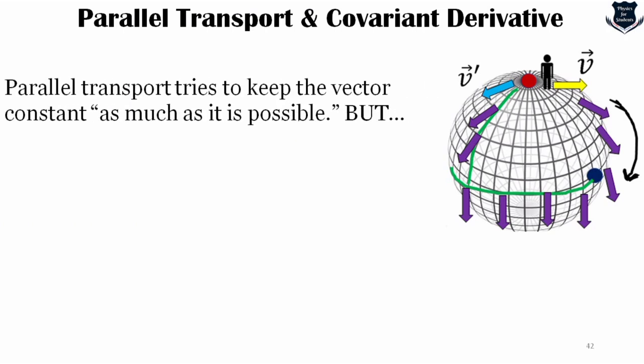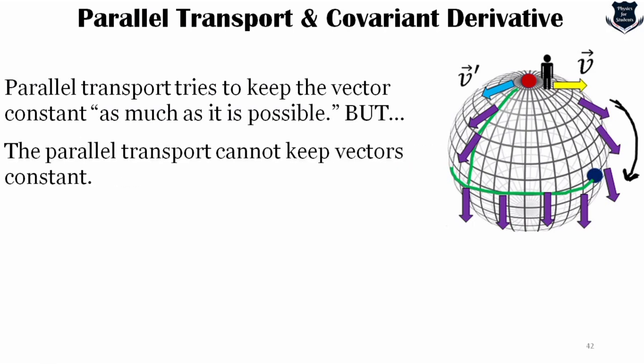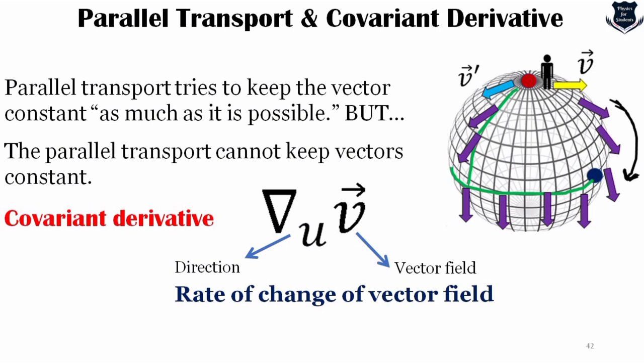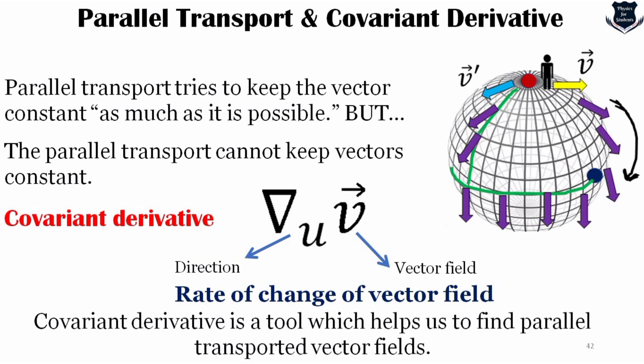In parallel transport we try to keep the vector constant, but in curved space it is not possible. So we introduce a new concept called the covariant derivative, denoted by the nabla symbol. The covariant derivative denotes the rate of change of a vector field. It is a tool that helps us find parallel transport in vector fields — because parallel transport in curved spaces doesn't work as expected, the covariant derivative comes as a saviour, helping us find the parallel transport in vector fields.